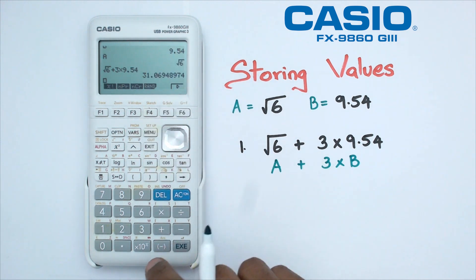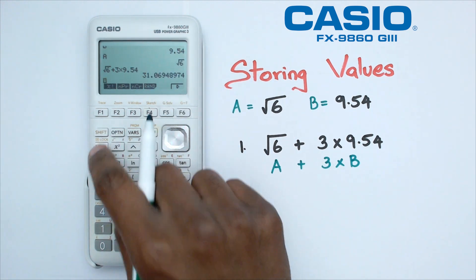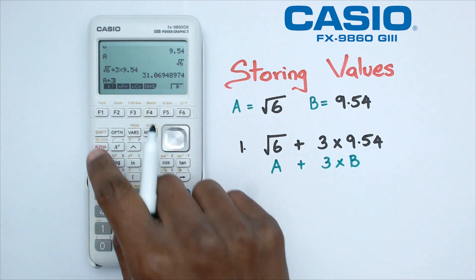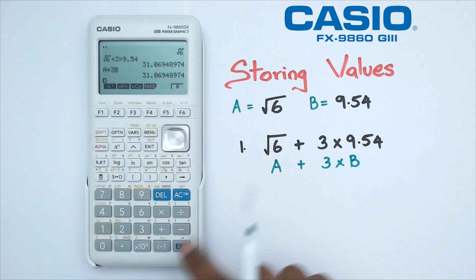But let's say we want to actually do A plus 3B. So we're going to go alpha A plus three times alpha B—that's just going to be three times B—and as you can see you're actually getting that same answer.